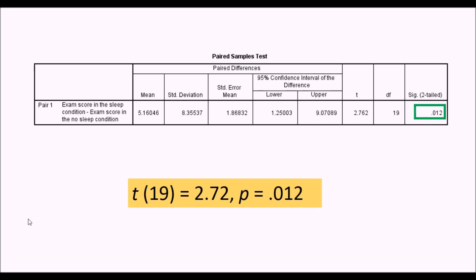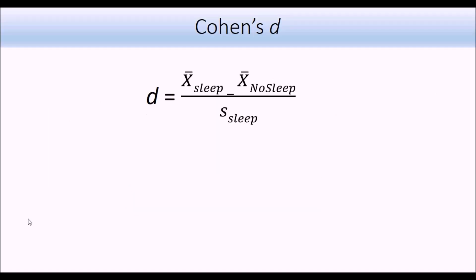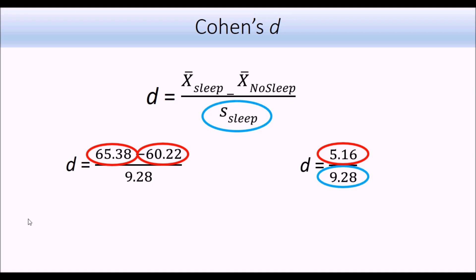Like before, we can add Cohen's D as a measure of effect size. The mean scores for condition 1 and condition 2 this time were 65.38 and 60.22, which gives us a difference of 5.16. Divide this by the standard deviation for the sleep group, and this will give us Cohen's D. Two things to note here: first of all, the difference between the two conditions was slightly less than what we had before when we did the independent t-test. And in addition, the standard deviation is slightly higher than what we had before for the two groups as well.